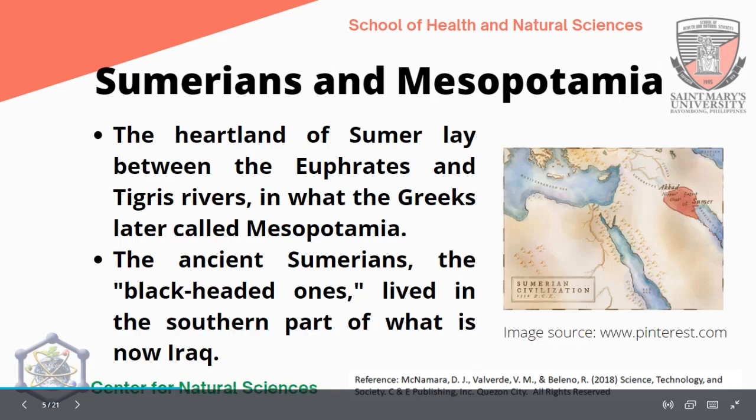Where is the Sumerian civilization and Mesopotamian civilization located? It is the heartland of Sumerian civilization between the Euphrates and Tigris rivers, in what the Greeks later called Mesopotamia. In terms of geographical location, it is in the northern part of the Arabian Peninsula. The ancient Sumerians, or the 'black-headed ones,' lived in the southern part of what is now called Iraq.